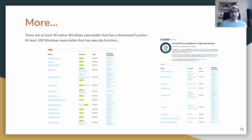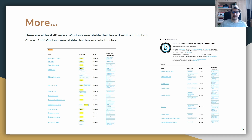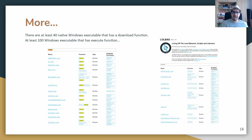I've covered only 10 of the LOLBas executables. You can check out the GitHub webpage linked in the description. There are at least 40 native Windows executables with a download function and at least 100 with an execute function. That means attackers have 40 ways to download something from the web and over 100 ways to execute something on your machine without creating a detection or alert. Thank you for listening, see you next time.